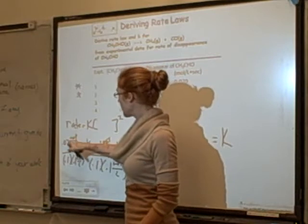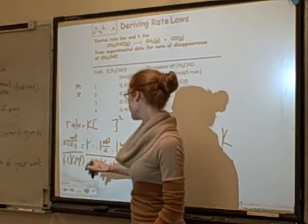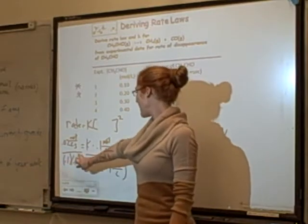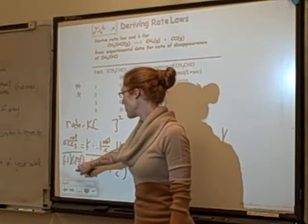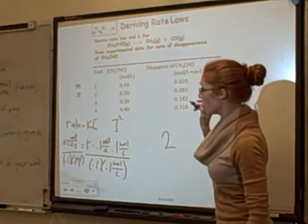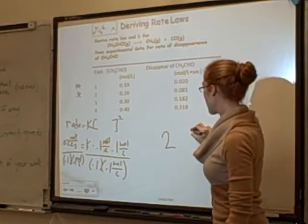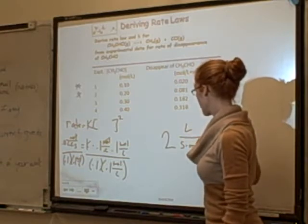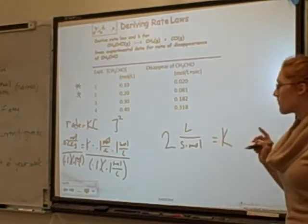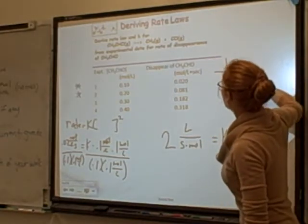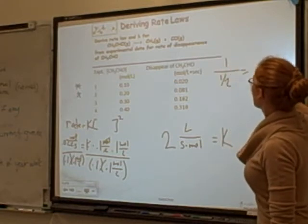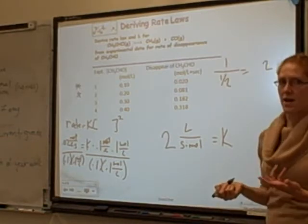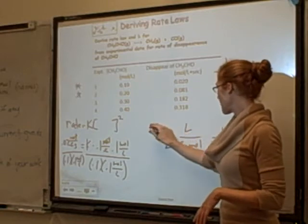For the units, I have 1 over second divided by moles per liter. Whenever you divide by a fraction, whatever's in the denominator goes up into the numerator. So 1 over second divided by moles per liter becomes liters per mole per second. Think of it like dividing 1 by one-half — the 2 goes up into the numerator and you get 2. So my final answer for k is 2 liters per mole per second.